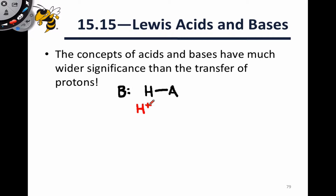What happens in a Bronsted-Lowry acid-base process is a proton is transferred from HA to B, but that proton transfer is actually driven by the lone pair on the base. That lone pair is key, and we can use arrows to demonstrate how the electrons flow to cause the transfer of this proton. This is a convention that you'll see throughout organic chemistry, and it's very important to start developing a feel for it here in 1212k.